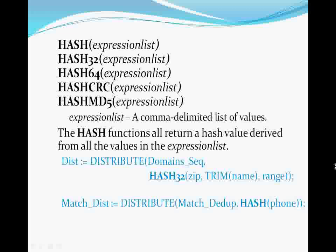ECL has five hash functions for you to use, and you may use them outside the context of DISTRIBUTE. HASH is a 32-bit hashing algorithm. HASH32 is a better 32-bit algorithm. HASH64 is its big brother. HASHCRC is a standard cyclical redundancy check algorithm. HASHMD5 is a 128-bit algorithm from MIT.